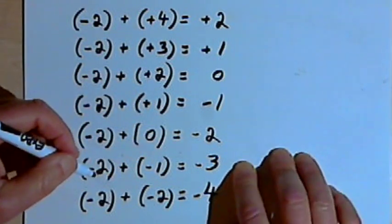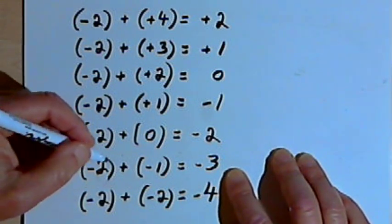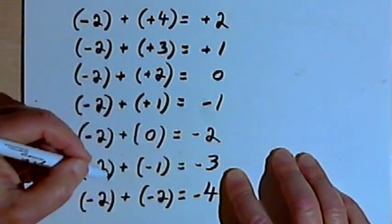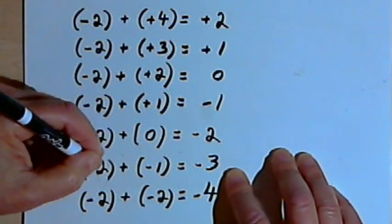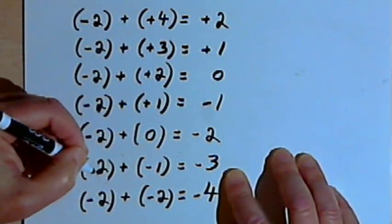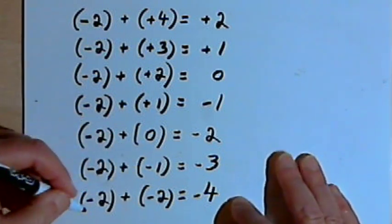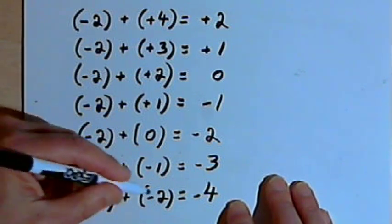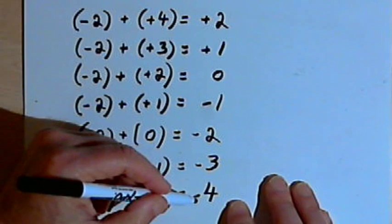Now I'm in an area where I'm adding two negative numbers. Negative 2 plus negative 1 is negative 3. When the signs are the same, I add the absolute values of the two numbers and use the sign they both had. The same thing happens with negative 2 plus negative 2: I add their absolute values to get 4, they were both negative, so I use the negative sign — negative 4.